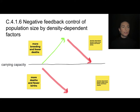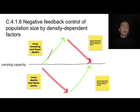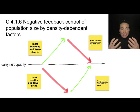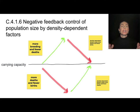Once those density-dependent factors become less of an issue, there are more births and fewer deaths, and you can see how these cycles develop — driven by density-dependent factors initiating negative feedback control.